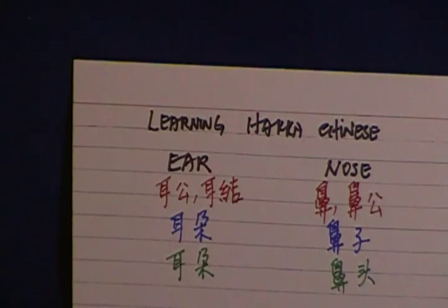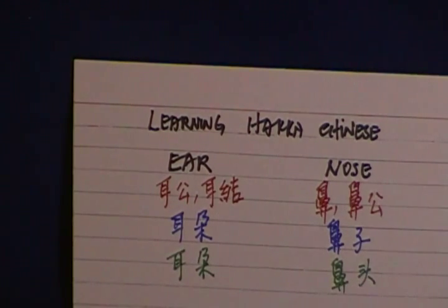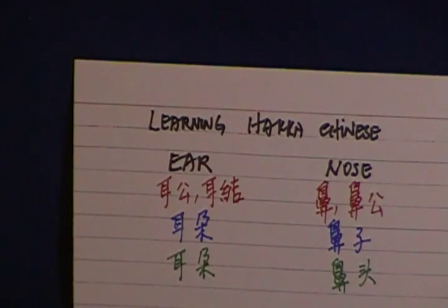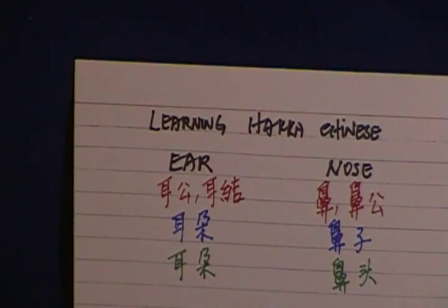Alright, repeat it again. Ni kong or ni ket in Hakka Chinese. Er duo in Mandarin. Ni ket in Shanghai dialect. Now we go to the next one.